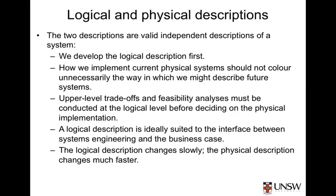The two descriptions are valid independent descriptions of a system, and it's very important that the system is described both logically or functionally and physically. We focus first on the logical description — that is the 'what': what we require the system to do. From that, we can then develop a series of candidate physical descriptions, and one of those physical descriptions will be finally chosen as our preferred physical solution. The second reason is that we mustn't allow the way in which we implement current systems in a physical manner to colour the way in which we might describe future systems.